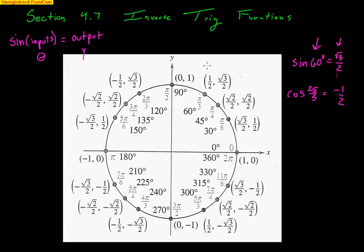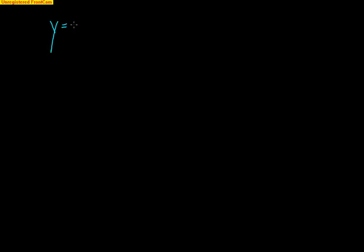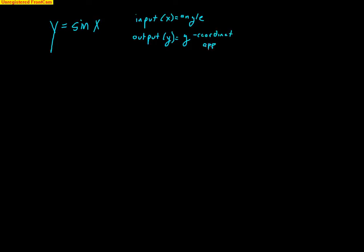The idea of inverse trig functions is we take these outputs and inputs and simply switch them. So the input becomes the output and the output becomes the input. Now the input is the y-coordinate from the unit circle, and the output is the angle. Mathematically, we have y equals sine of x, where x is the input — that's an angle, any angle — and y is the output, representing the y-coordinate from the unit circle, or opposite over hypotenuse, or y over r.